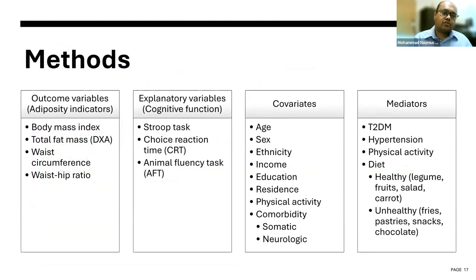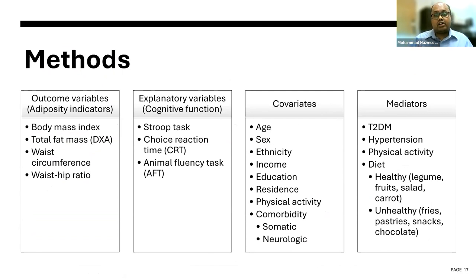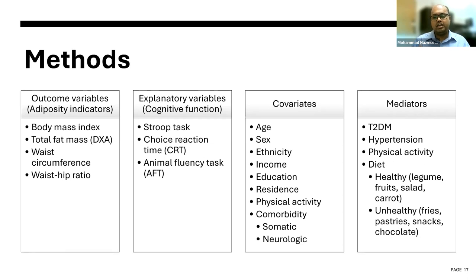These are the study variables for Study One. Our outcome variables are the adiposity indicators: body mass index, total fat mass measured by DXA, waist circumference, and waist-to-hip ratio. Our cognitive explanatory variables were the Stroop task, choice reaction time task, and animal fluency task. We adjusted our analysis for major sociodemographic variables such as age, sex, ethnicity, income, education, residence, and physical activity. For comorbidity, we created a somatic comorbidity index and a neurologic comorbidity index. For mediators, we selected health conditions like type 2 diabetes mellitus and hypertension, and lifestyle mediators including physical activity, healthy diet, and unhealthy diet.